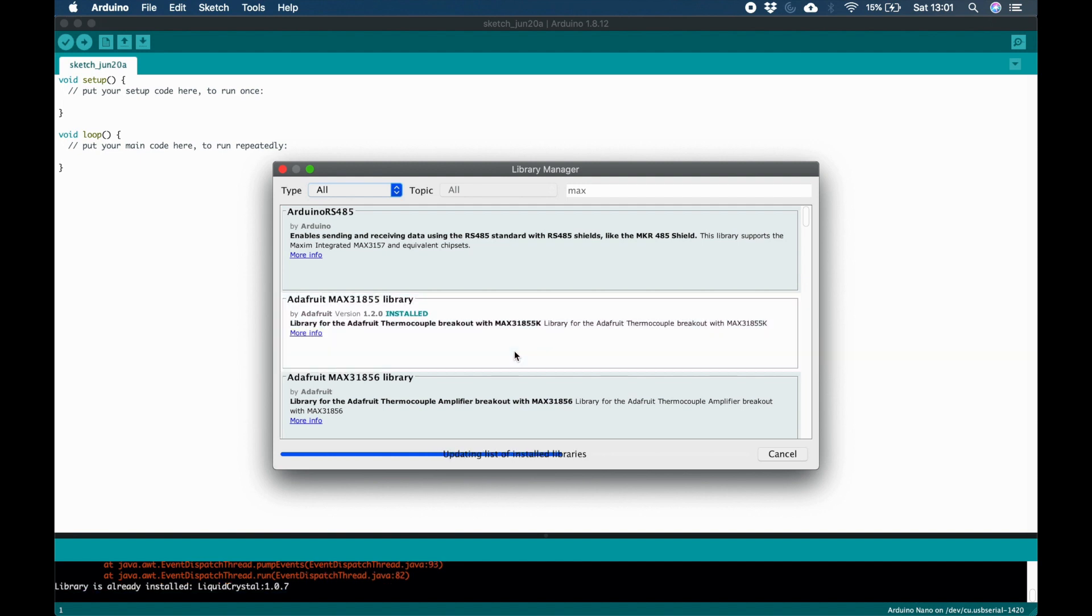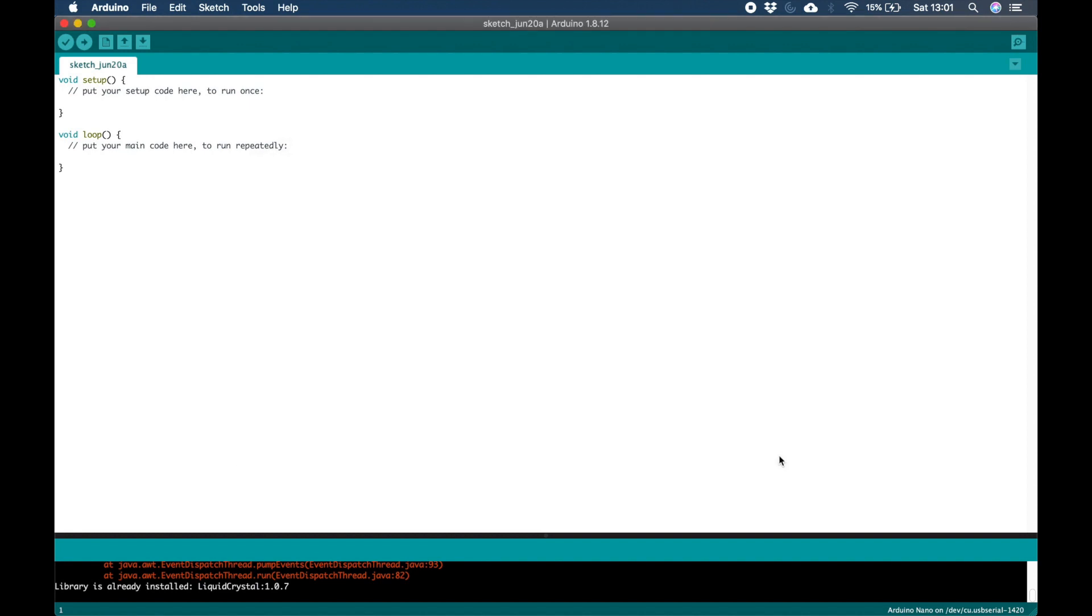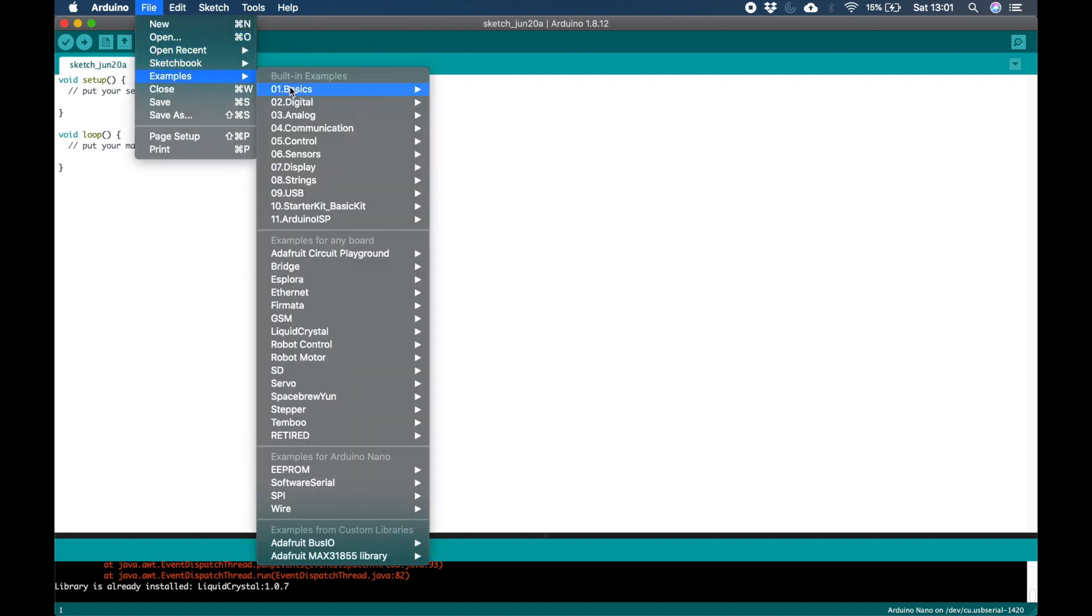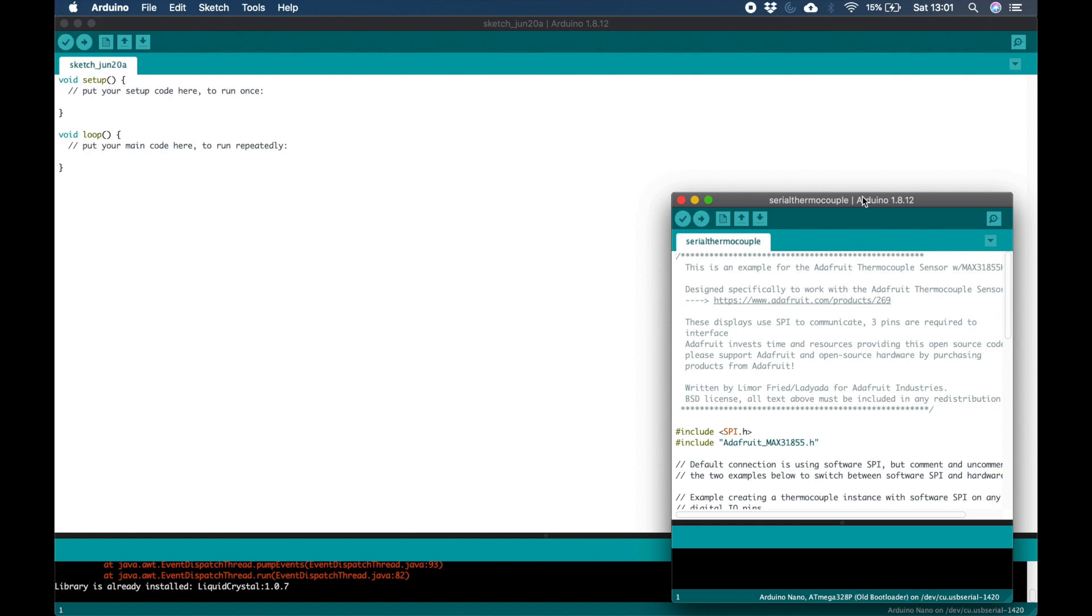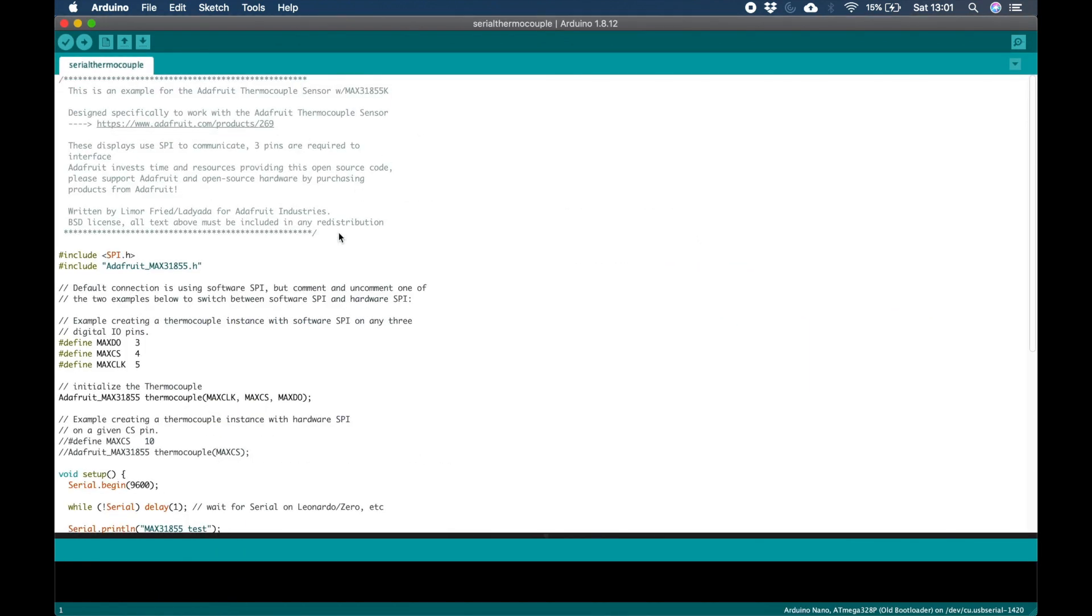From this point you can close the Library Manager and you can open the example provided in the library. I'm going to open the example provided by the Adafruit MAX 31855 library called Serial Thermocouple. This example will send the live data over serial communications using USB and can be viewed using the serial monitor in the Arduino software.